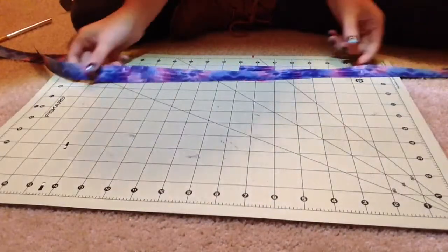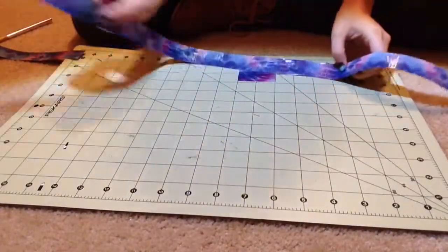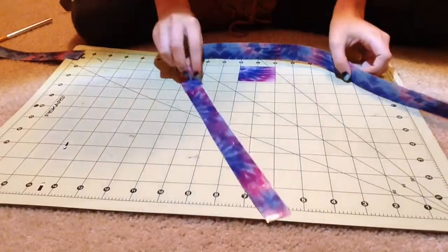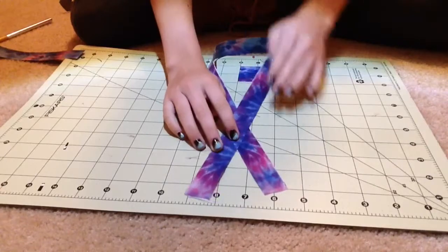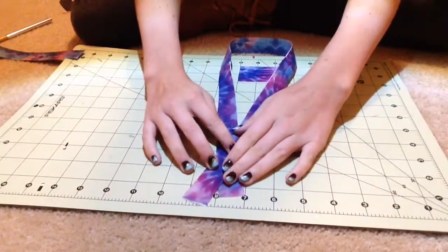Now what we are going to do is create the actual shape of the lanyard. We are going to do it like this. At the end, we are going to have the cross at the very bottom.